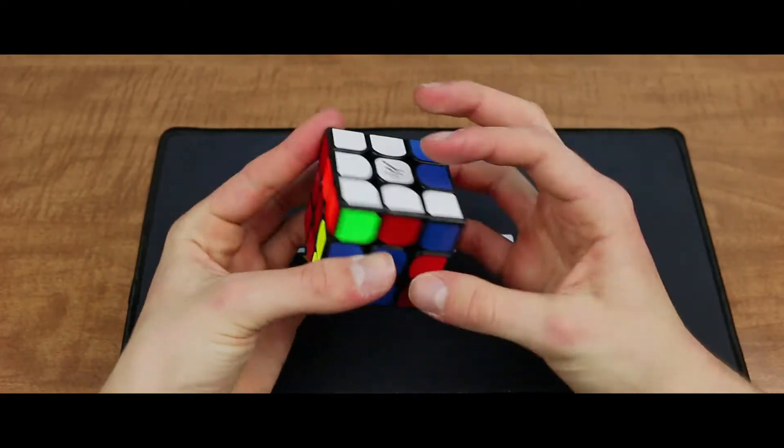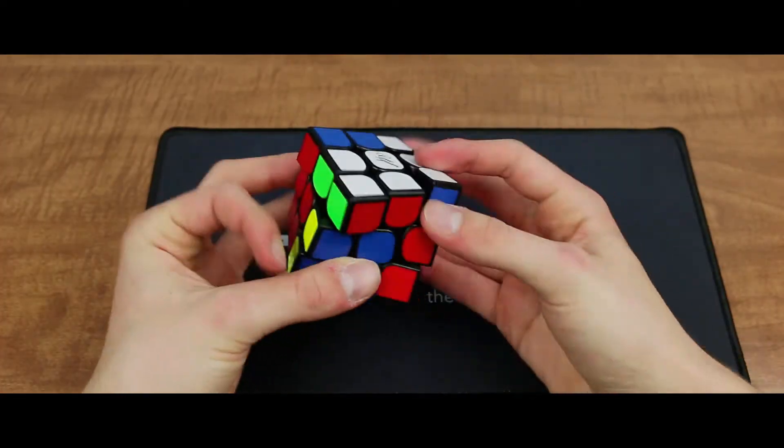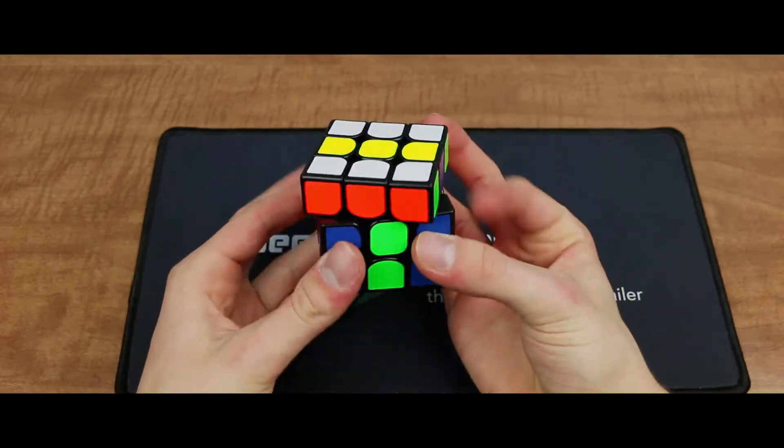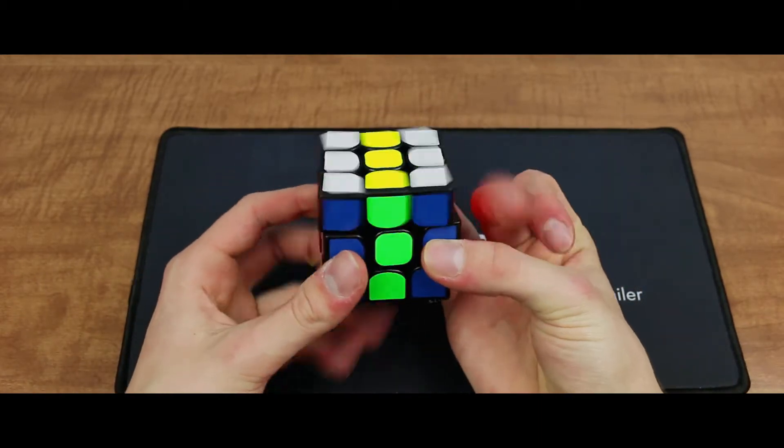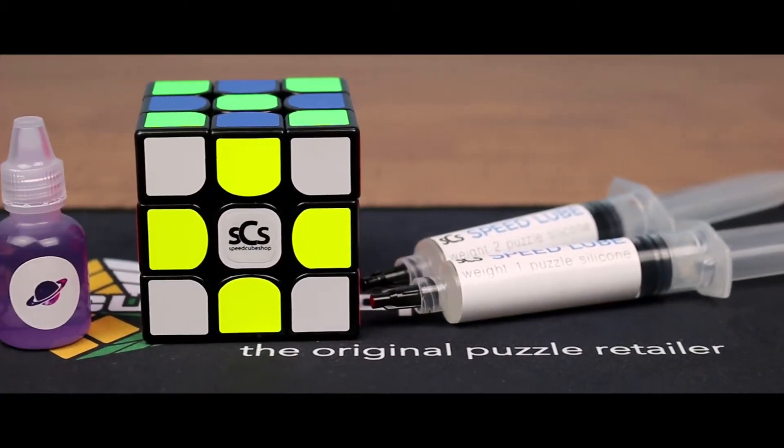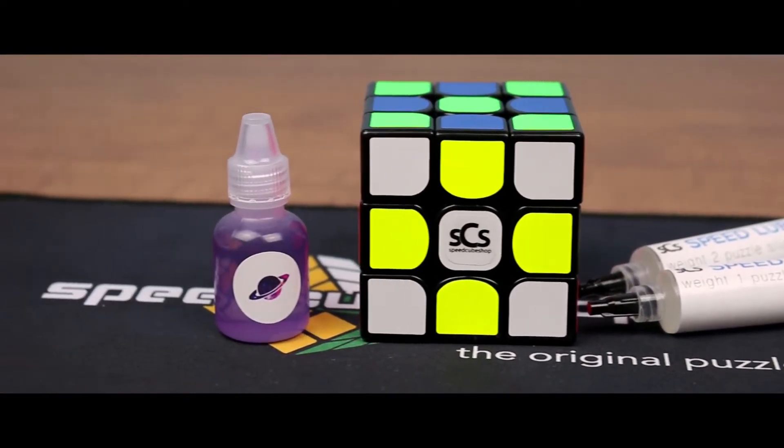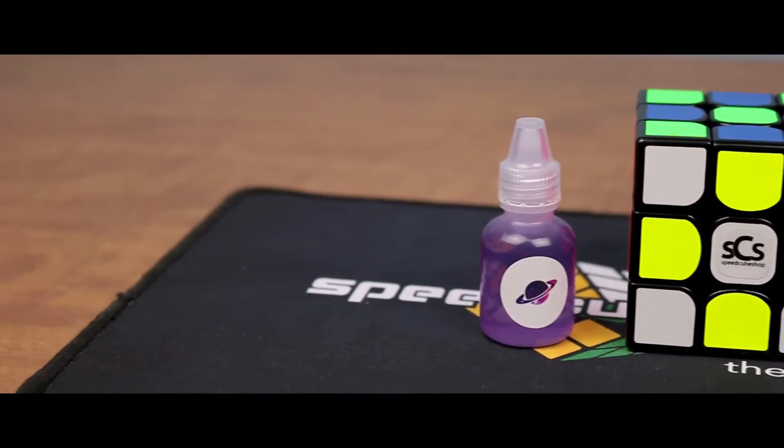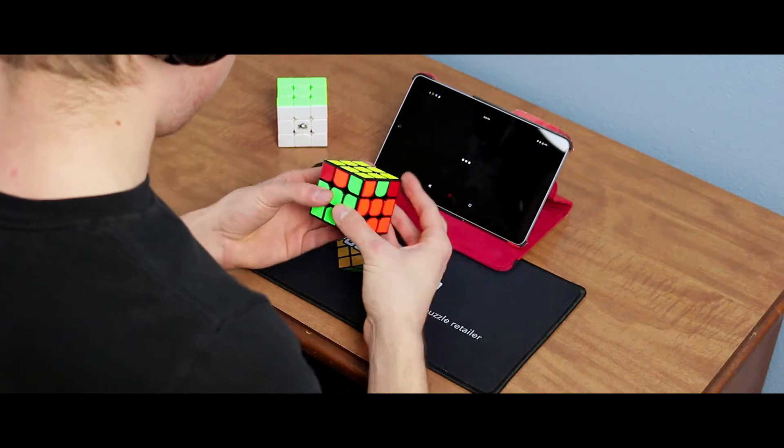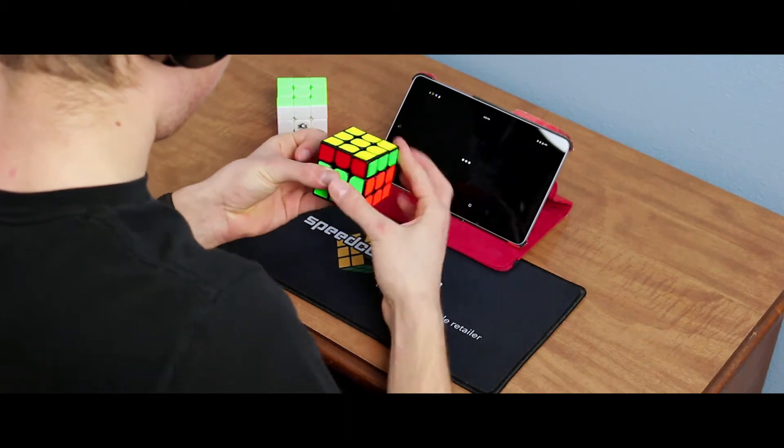Out of the box, the Yuexiao Pro-M had a sandy feel and honestly didn't perform well. I would lock up and catch quite a bit, and it couldn't corner cut very well. However, I found that putting Galaxy and some optional weight 1 or 2 speed lube from SpeedCubeShop worked really well in this cube, and my Pro-Ms are now smooth, well-performing 3x3s.